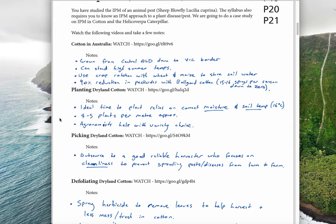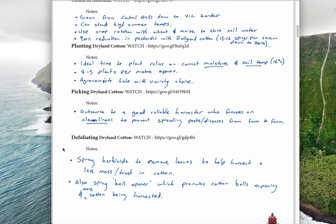In terms of planting cotton, the ideal time to plant depends on when the moisture in the soil is right and also the temperature of the soil, which needs to be around 16 degrees Celsius. You're planting roughly four to five plants per meter in a row, and you can use agronomists, which are people that specialize in coming and consulting and telling you when you should do things.